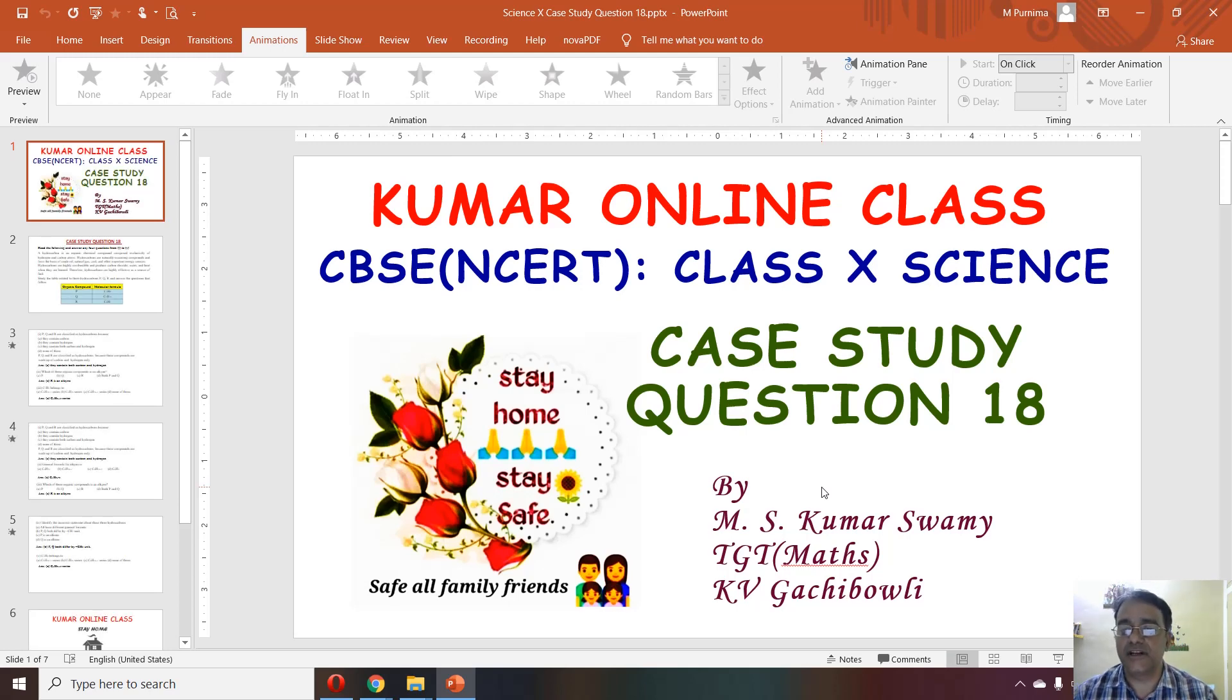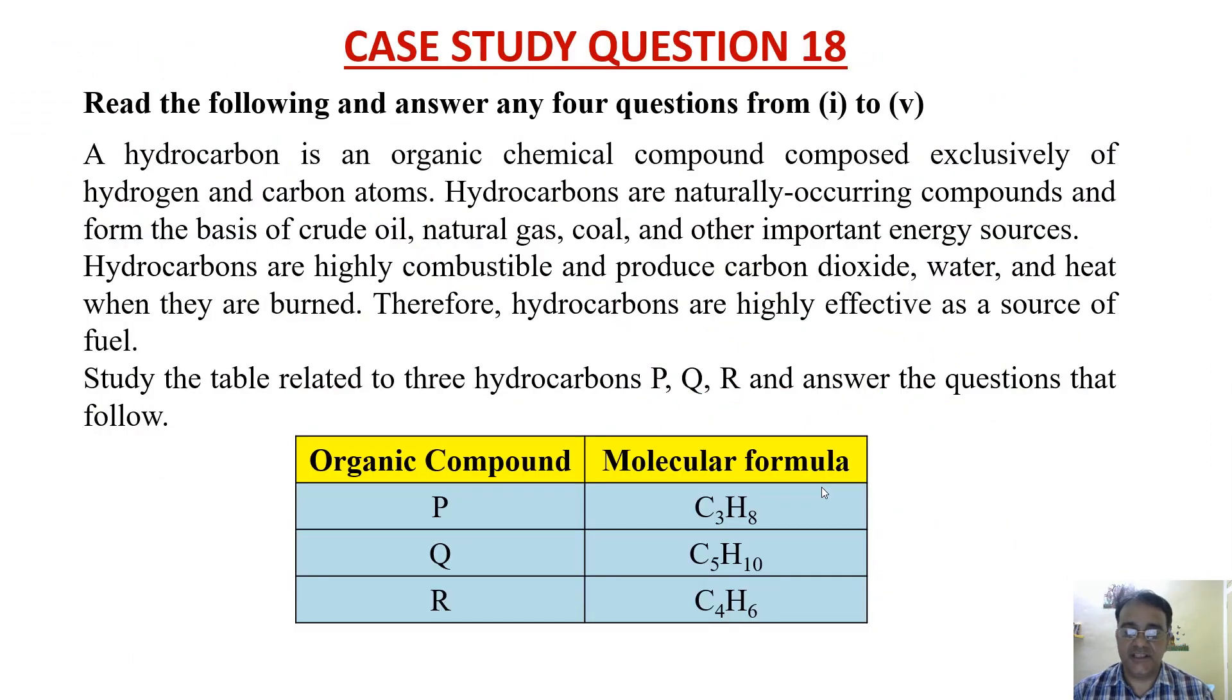Okay, so now we are going to start case study question number 18. This is from chemistry, carbon and its compounds. The context is that a hydrocarbon is an organic chemical compound composed exclusively of hydrogen and carbon atoms. Hydrocarbons are naturally occurring compounds and form the basis of crude oil, natural gas, coal, and other important energy sources. Hydrocarbons are highly combustible and produce carbon dioxide, water, and heat when they are burned. Therefore, hydrocarbons are highly effective as a source of fuel. Study the table related to three hydrocarbons P, Q, and R and answer the questions that follow. So P is C₃H₈, Q is C₅H₁₀, and R is C₄H₆.